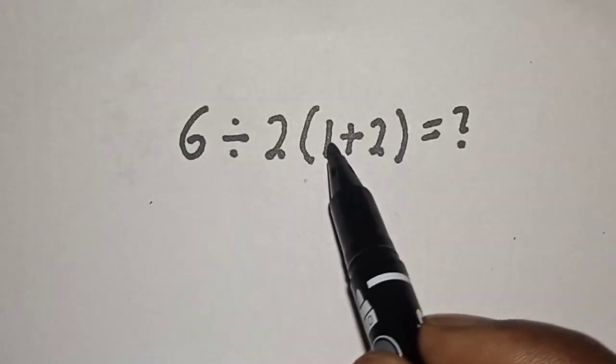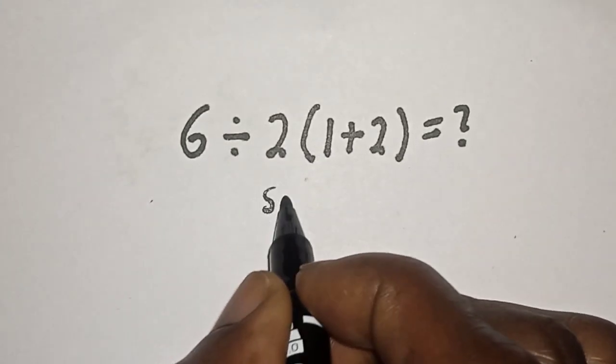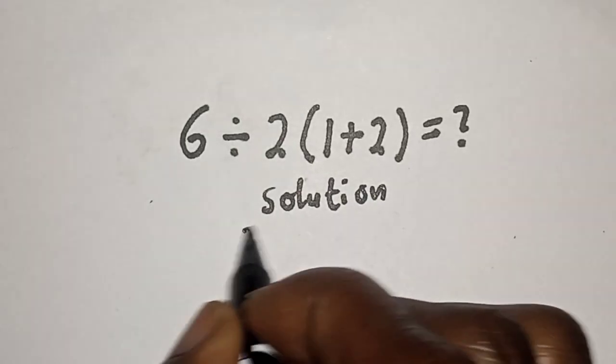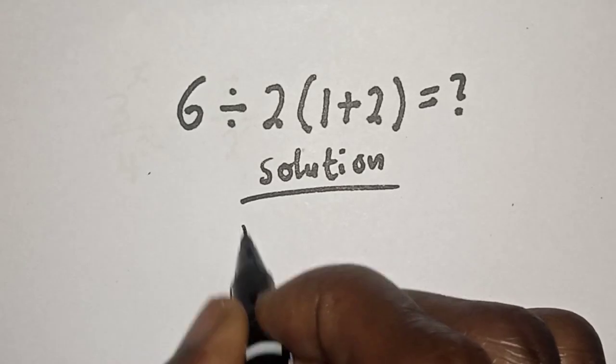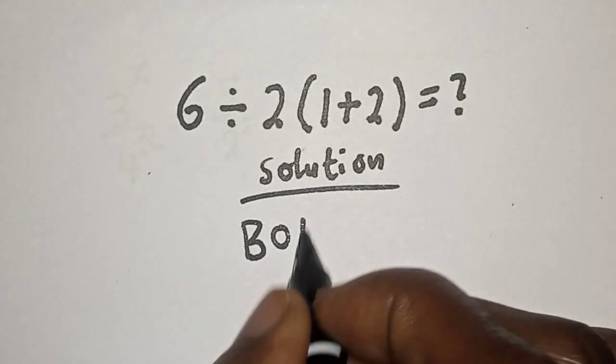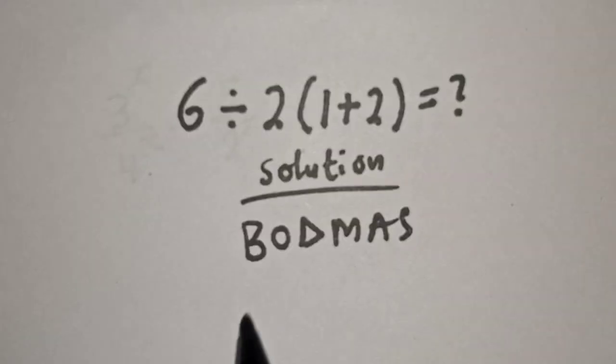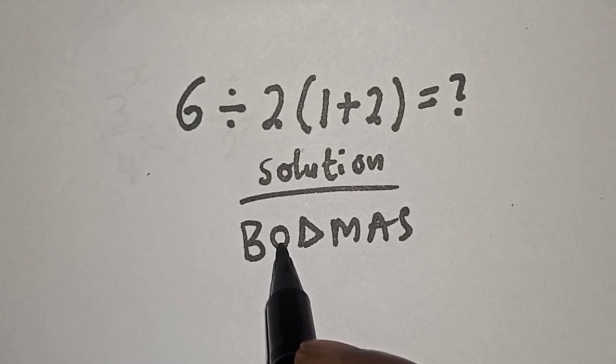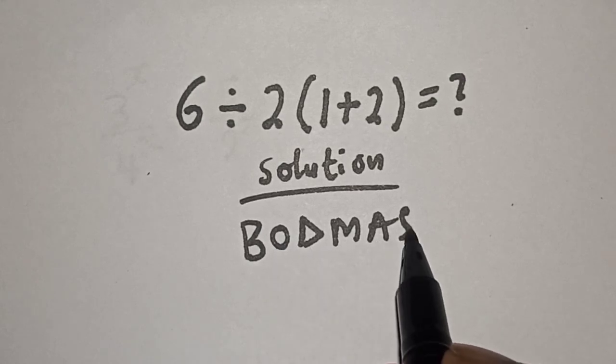Let's see what the answer will look like. Solution. Then let's make use of what we call BODMAS. The first one is bracket or parenthesis, then this one is order, this is division, multiplication, addition, and subtraction.